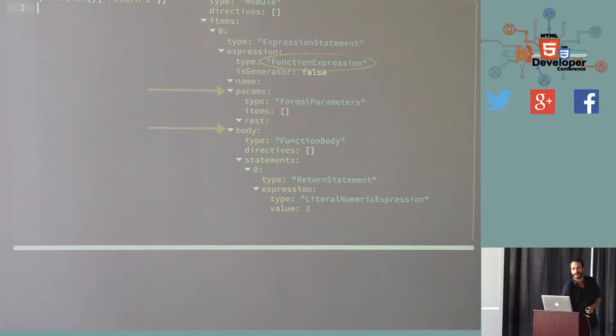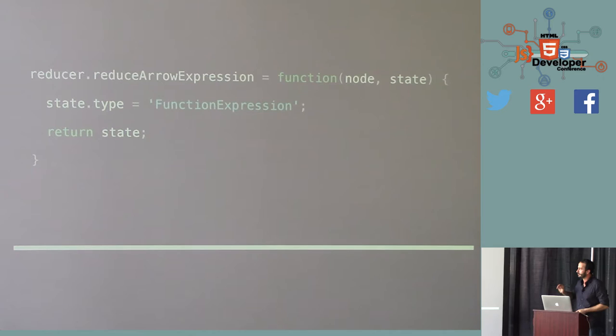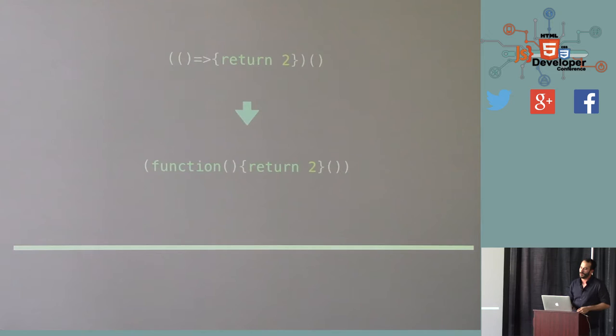Keep those in mind as we go to the next screen. So this is what an AST looks like for a function expression. Compare the values that we were just looking for. So we do have a params and a body, and lucky for us, they are of the exact same types we want - formal parameters and function body. There are a few other properties there, is generator and name, but in a function expression that we're targeting, they are falsy values, so we can probably do okay just ignoring them for now. This is our reduction function for arrow expressions. All we're doing is adding reduce arrow expression to our reducer object, taking in a node and a state, and all we're doing with that state is changing the type to function expression. We run that, and we get exactly what we wanted, and we find that it executes and returns two.